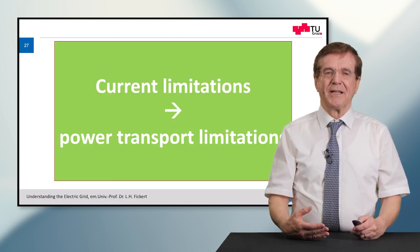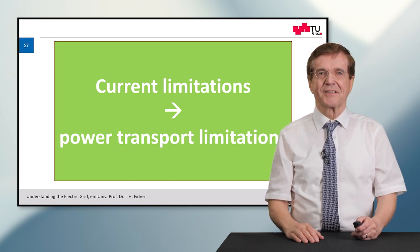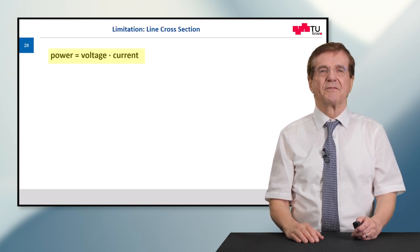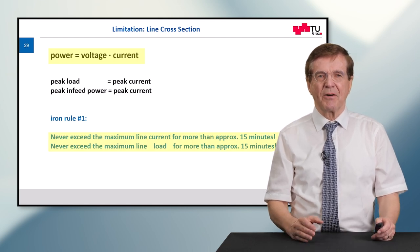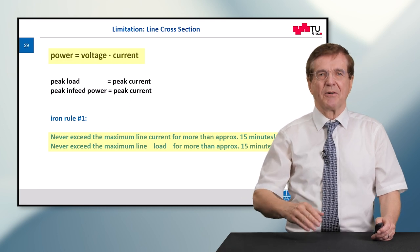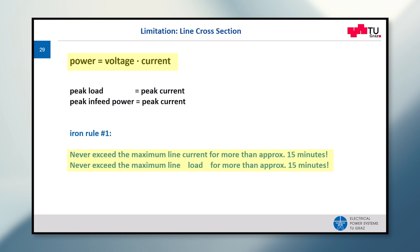Now from these contemplations, the current limitations which lead to power transport limitations can be derived. So power is voltage times current. This means the peak load means peak power, and this means peak current. And the peak infeed power for generation as well means again peak current. And here we come to iron rule number one. This means never exceed the maximum line current for more than 50 minutes. Never exceed the maximum line load for more than 15 minutes.